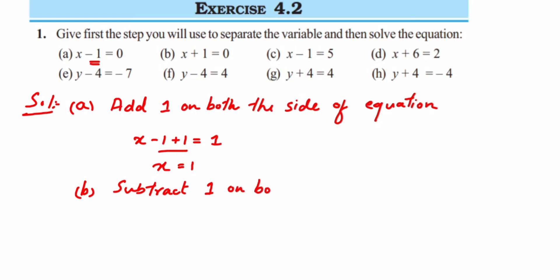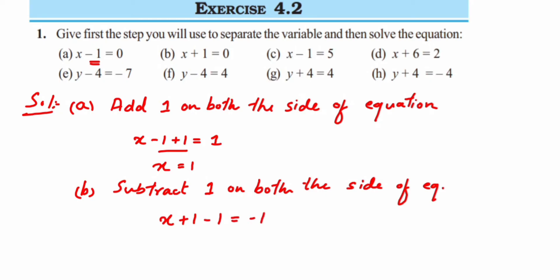So we subtract 1 on both sides of the equation. This gives x plus 1 minus 1 is equal to minus 1. Plus 1 minus 1 becomes 0, so x is equal to minus 1. That is the answer for part (b).